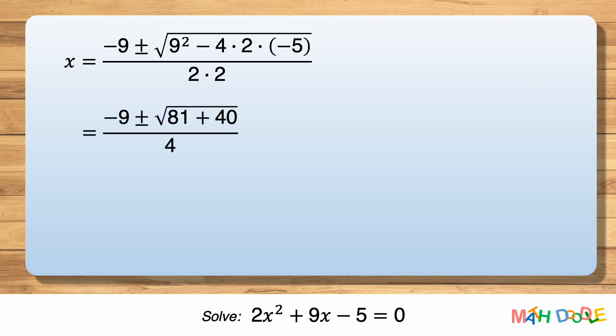And let's simplify the radical. 81 plus 40 is 121, and square root of 121 is 11.